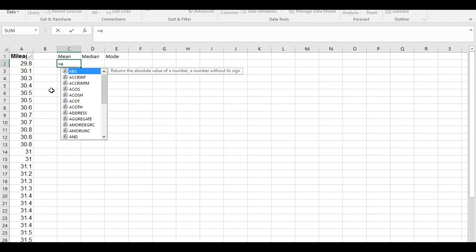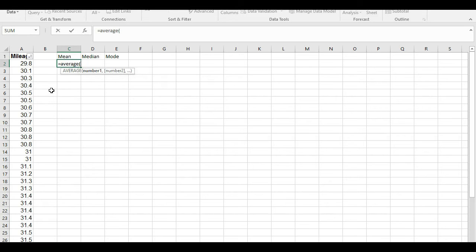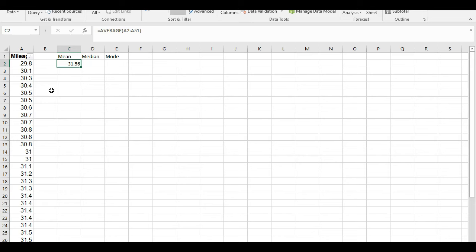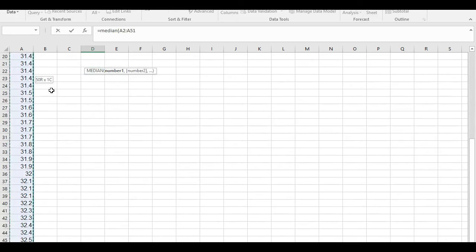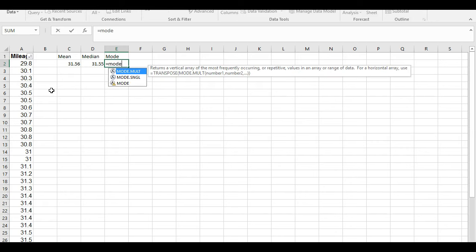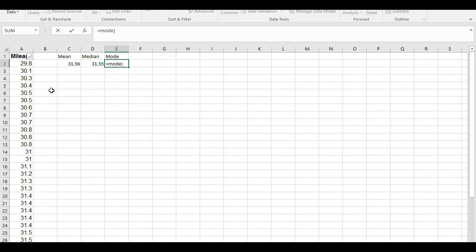For mean, the function is equals average of, in open parenthesis, and then you would just highlight all the data. Gives you 31.56. For median, we would say median of, and then highlight all the data. And mode, I think it's just standard mode. So, that's how you do it in Excel. Average of the area that you're averaging, median of the area that you're covering, and then mode of the area that you're covering.